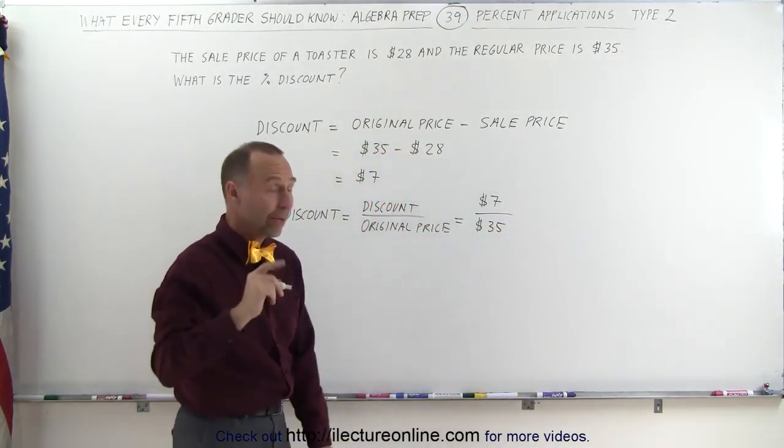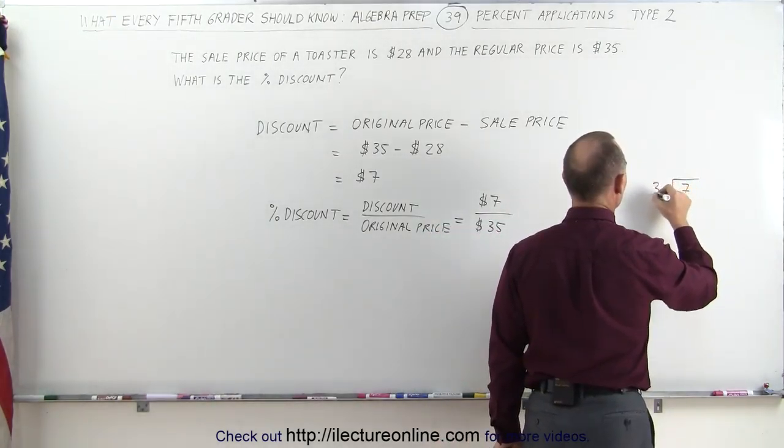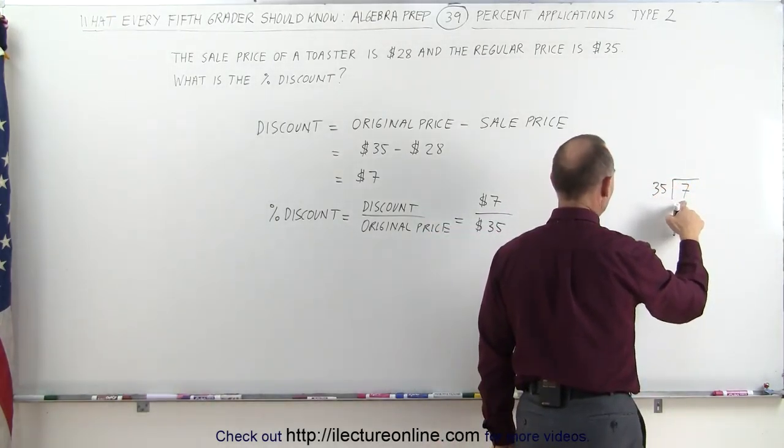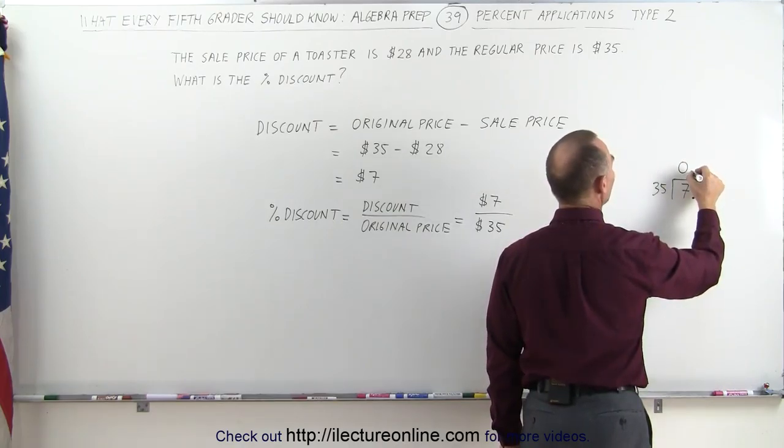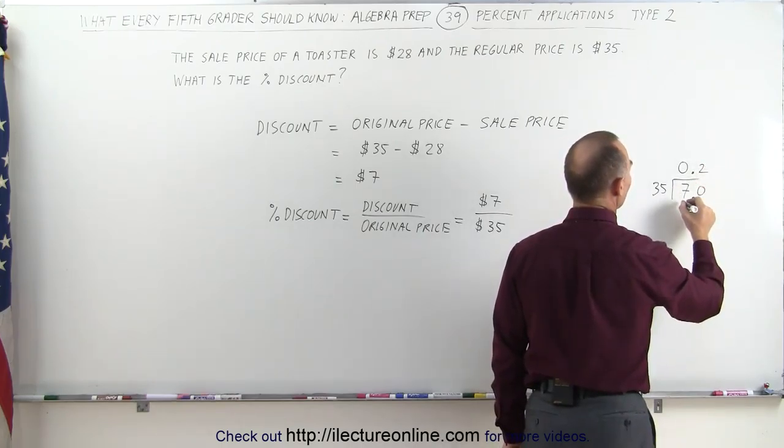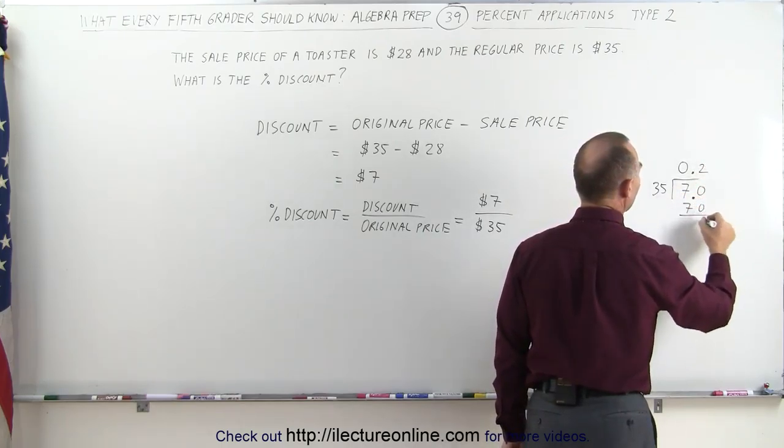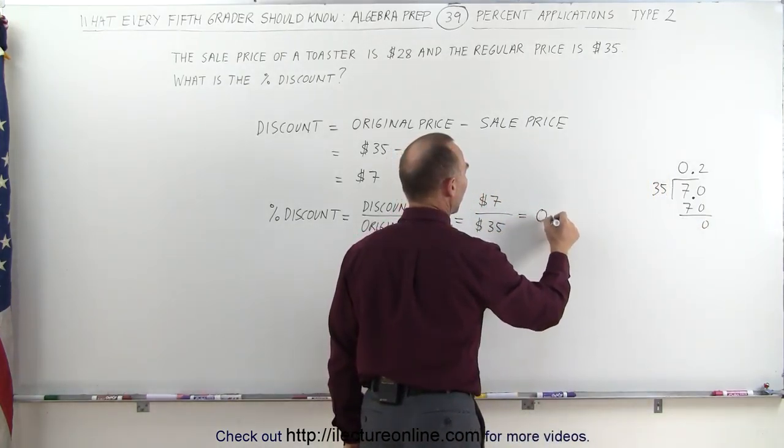What percent discount is that? Let's go ahead and try that longhand division. 7 divided by 35. 35 does not fit into 7, so we get a 0 there. Now we need a decimal point. Add another 0. 35 goes into 70, 2 times. 2 times 35 is 70, remainder 0, which means that this is the same as 0.2.